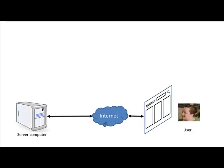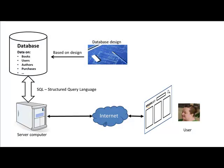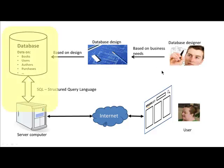To recap our overall course structure: you have a user using a browser, and through the browser and through the internet, the user's request goes to a server computer. The server computer then does the business processing, and as part of that processing it retrieves information from the database using SQL. As I have just pointed out, the database itself has been designed and populated with information, and that design was carried out by the database designer. So far we have looked at how we use SQL to get information out of the database — structured query language. But now it's time to look at how that database was designed in the first place.